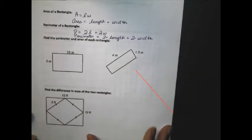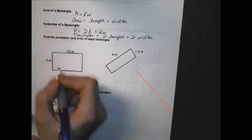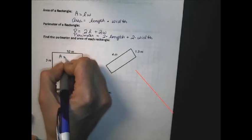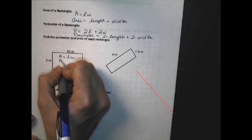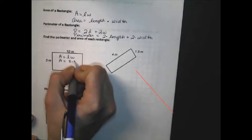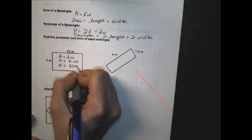In the following two examples, we're going to find the perimeter and the area of each rectangle. In this first one, my area would simply equal the length times the width, which would mean that A equals 3 times 10. Therefore, A equals 30 meters squared.